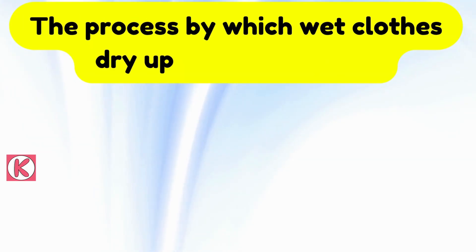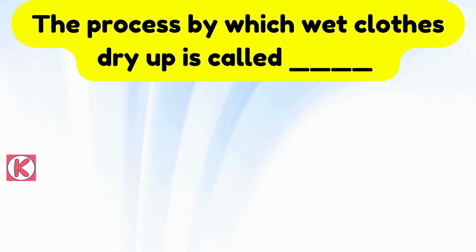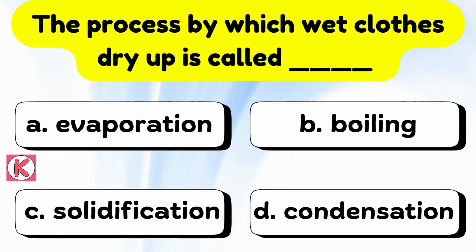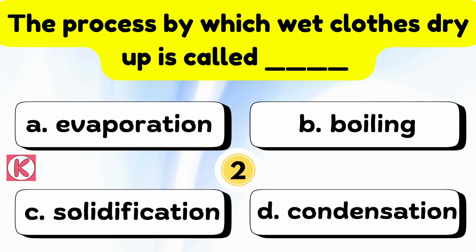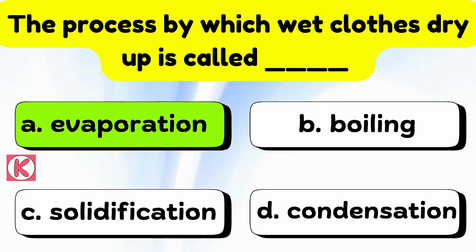Question number 4. The process by which wet cloths dry up is called? Correct answer, Option E, Evaporation.